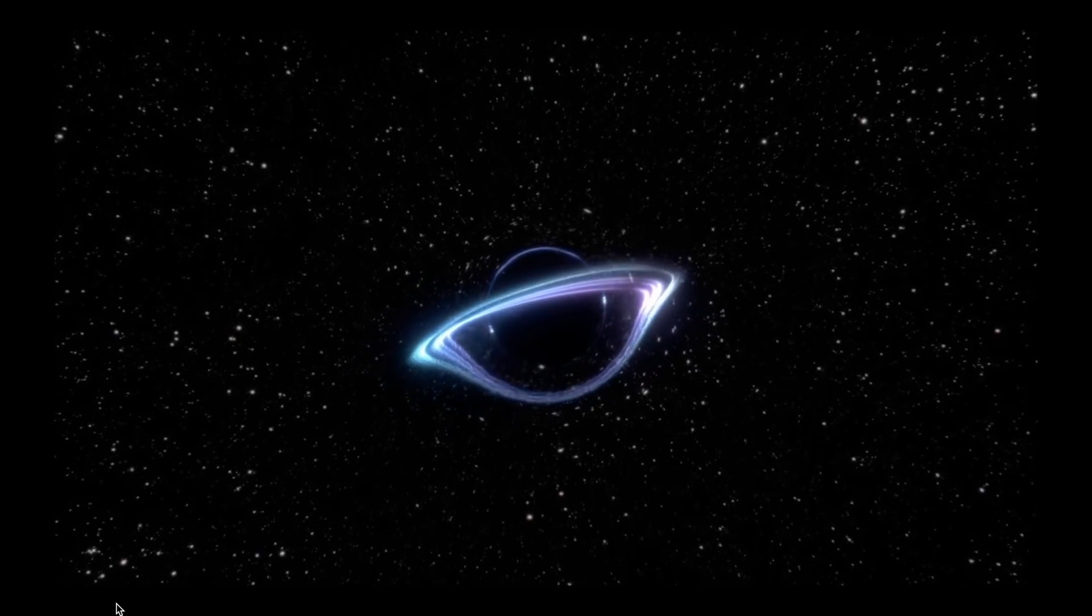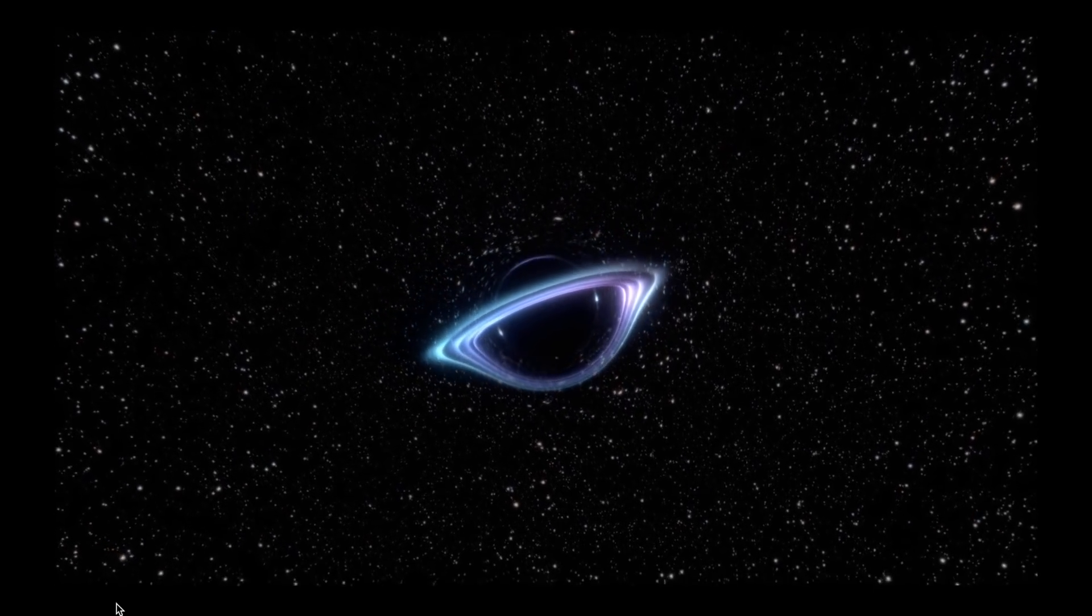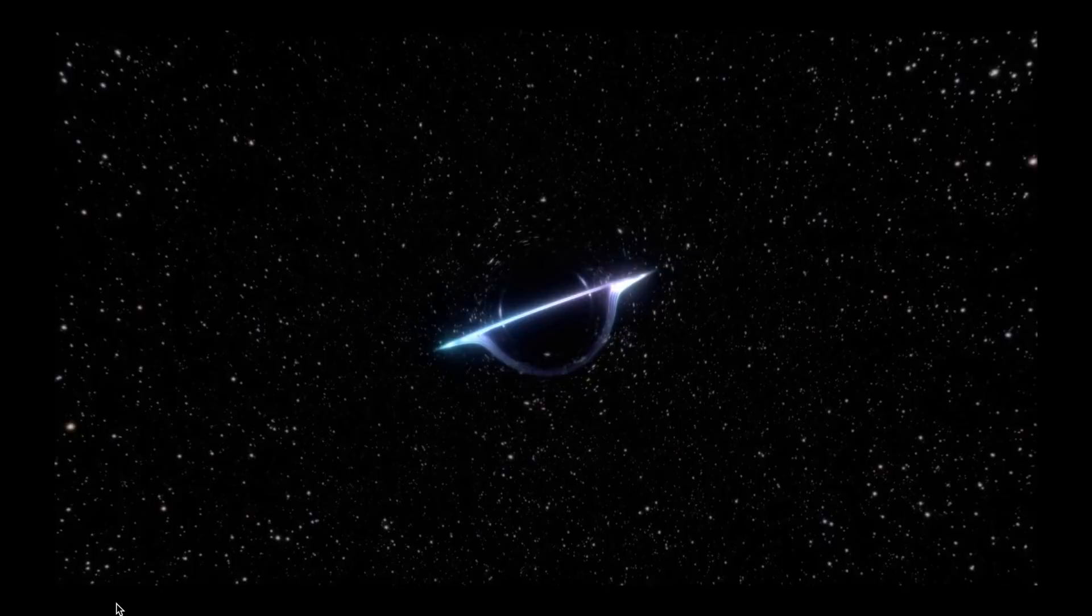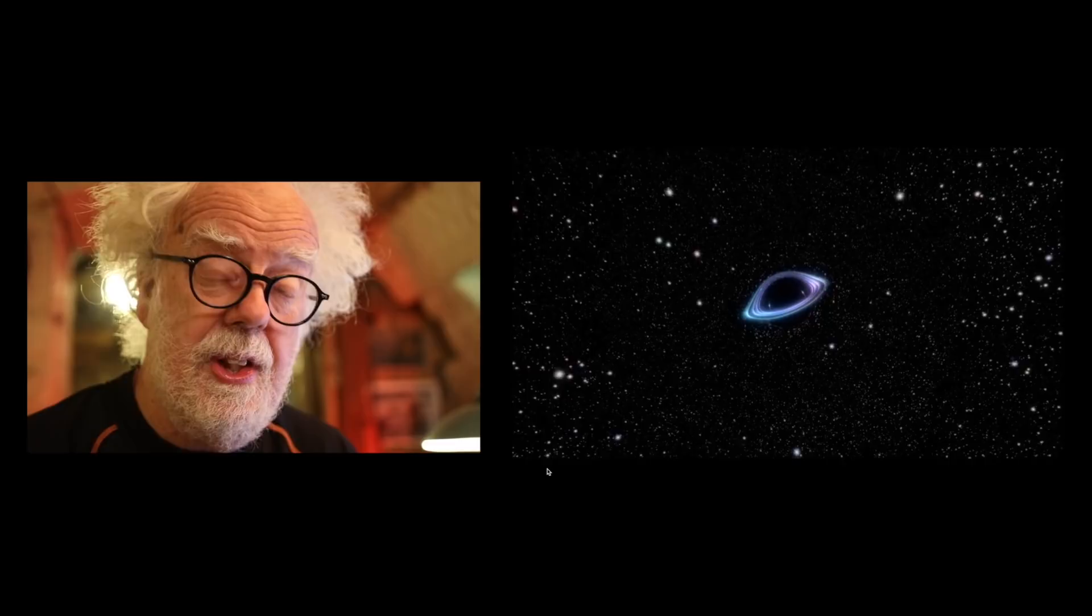This is a graphic simulation of what they think happened. Two black holes, and we'll get onto what exactly a black hole is and why these ones were very odd, collided and produced a wave of gravity that eventually, seven billion years later, hit the sensors in both North America and Italy and produced the result. And between the two detectors, they could work out where this event occurred.